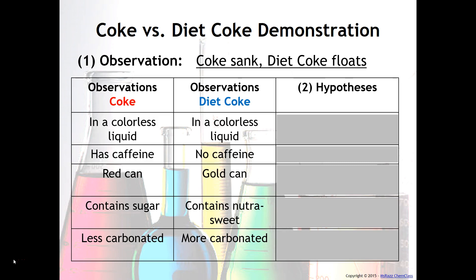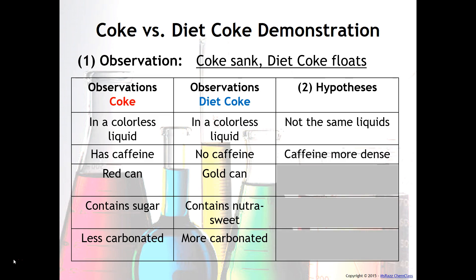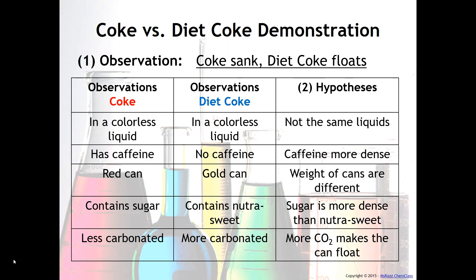Then we came up with some hypotheses to explain why the Coke sank and the Diet Coke floats. For example, one hypothesis was that the two colorless liquids are not the same — maybe one is water and the other is alcohol or ethanol. Another was that caffeine might be more dense, causing the Coke to sink. These were all different hypotheses that we came up with.